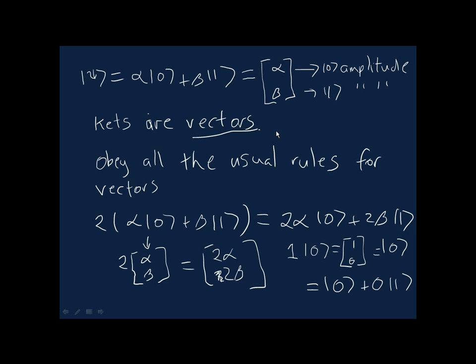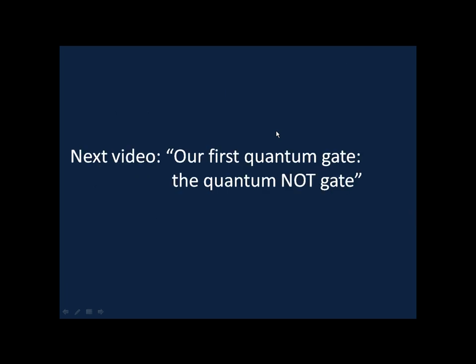That's all I want to say about these simple rules for manipulating quantum states. In the next video, we're going to look at our first example of a quantum logic gate - something that can be used to manipulate quantum information. We're going to look at a very simple quantum logic gate, the quantum NOT gate. It's simple, but it turns out to be very important in doing quantum computations, and so it's a good starting point for us to work with.